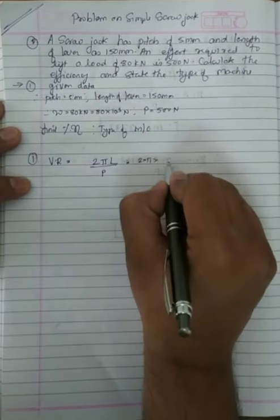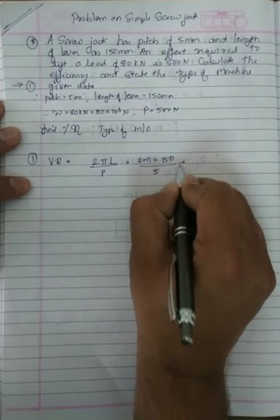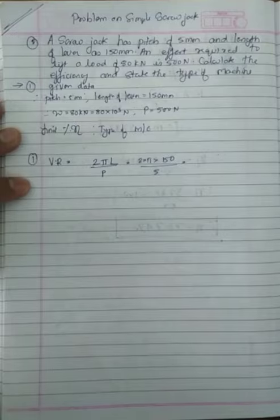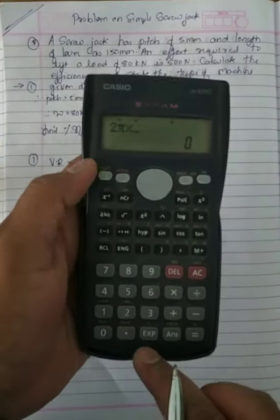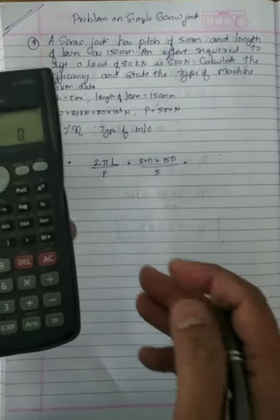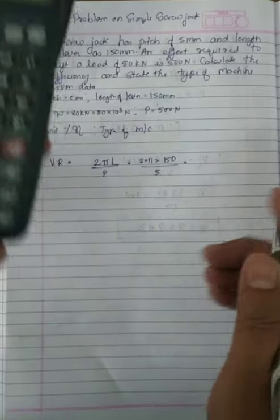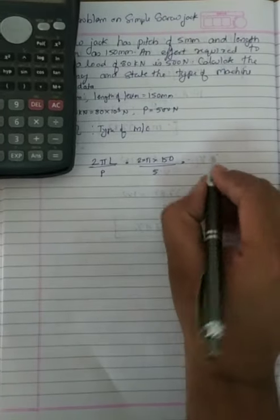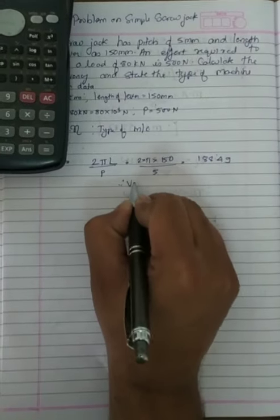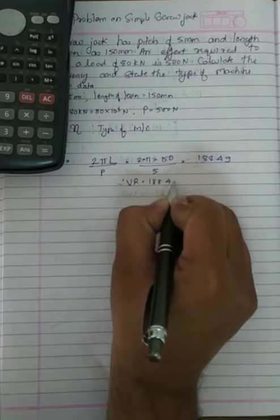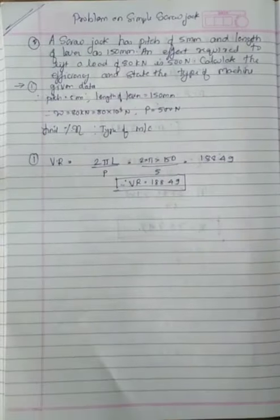Velocity ratio equals 2π into L, L is 150, upon P is 5. So calculate: 2π into 150 upon 5. So velocity ratio is 188.49.